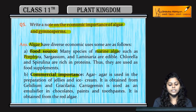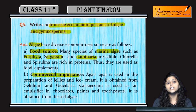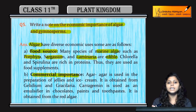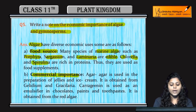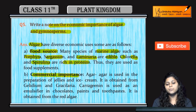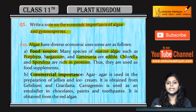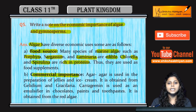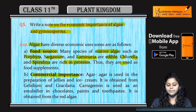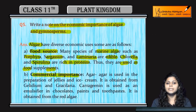Talking about food, marine algae such as porphyra, sargassum, and laminaria are edible in nature. Chlorella and spirulina are protein-rich and also edible. They are used as food supplements.